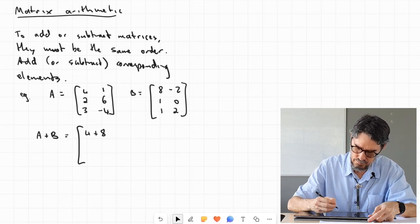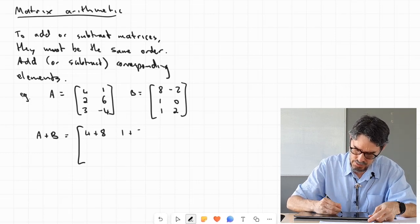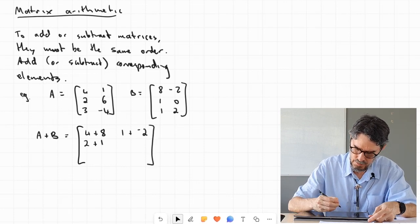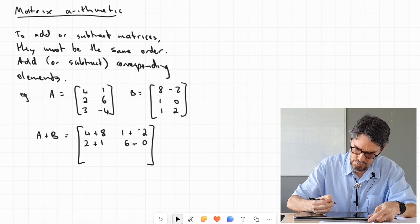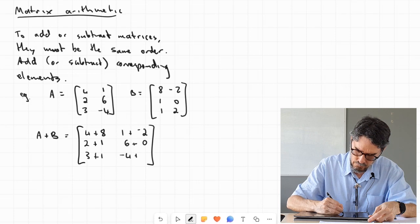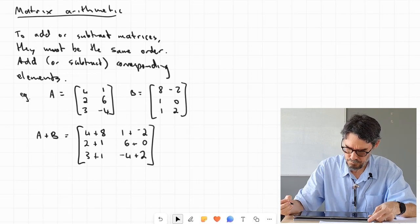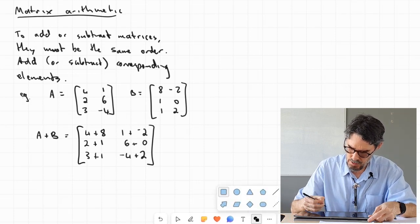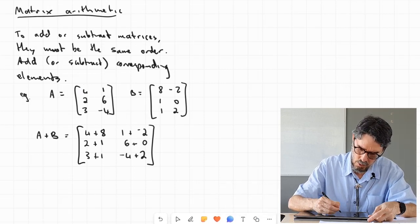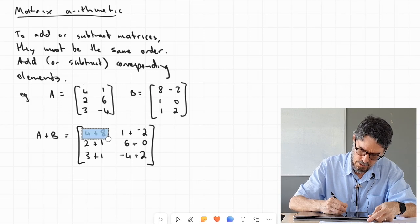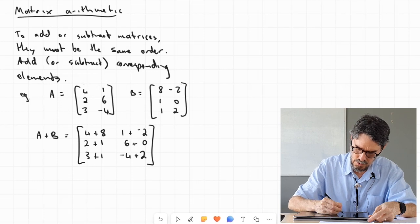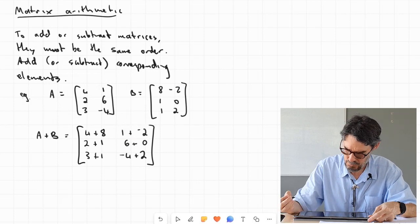4 plus 8, 1 plus negative 2, 2 plus 1, 6 plus 0, 3 plus 1, negative 4 plus 2. See how I have got 4 and 8 added for the first element, 1 and negative 2 added for the second element, and so on.